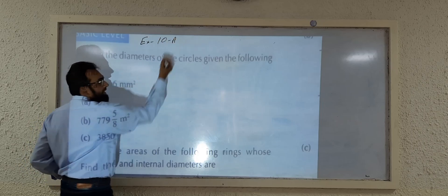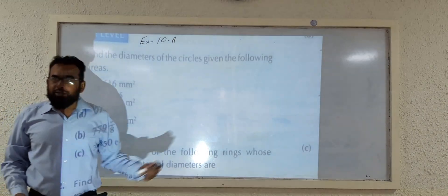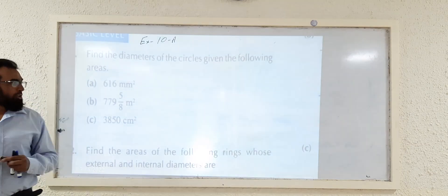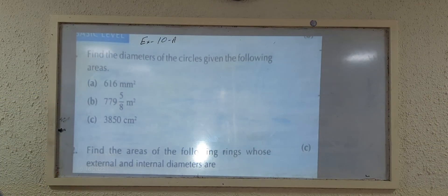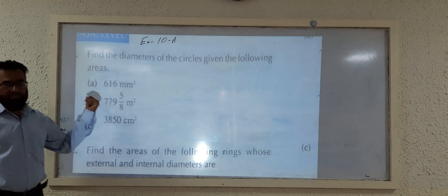This is exercise 10a. Here you can see: find the diameters of the circles given the following areas.